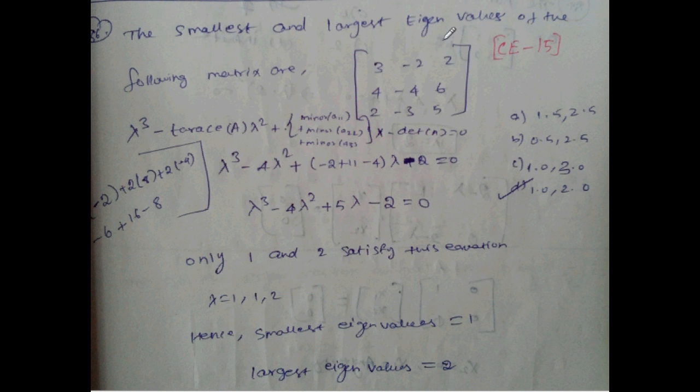The smallest and largest eigenvalue of the following matrix are: [3, -2, 2; 4, -4, 6; 2, -3, 5].